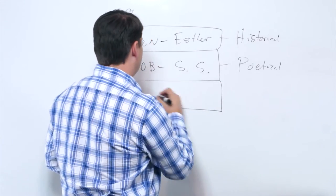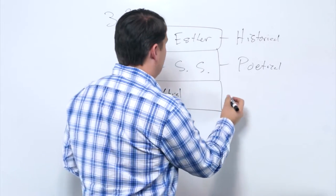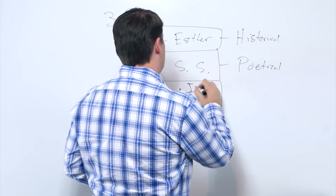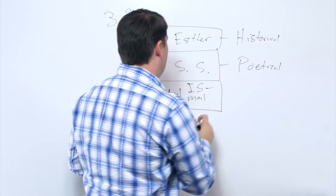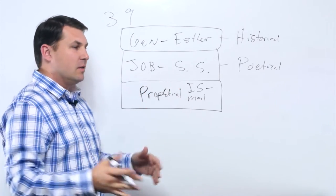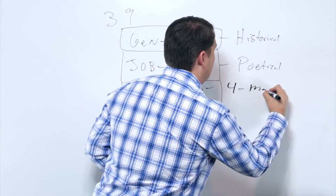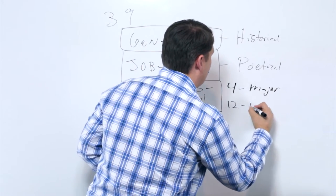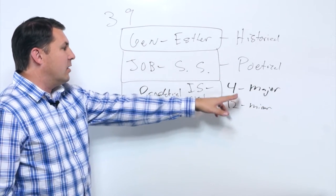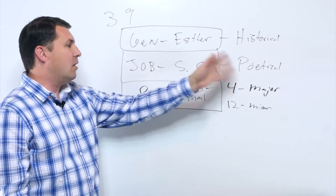But the last section is the prophetical, the prophets. What's our little guy here say? Isaiah all the way through Malachi. Now, our prophetic books are broken into two sections: the major prophets—that's Isaiah, Jeremiah, Ezekiel, and Daniel, four books—and then the 12 minor prophets. They're called major prophets because they wrote a lot. The minor prophets are called minor because they didn't write as much, but they're all just as important.